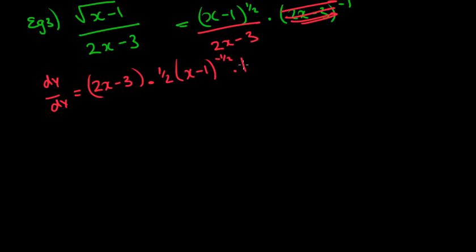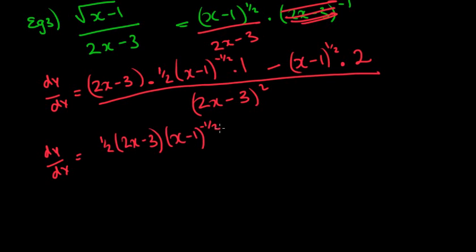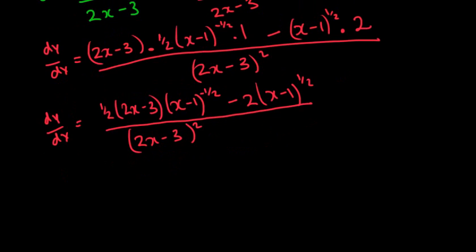Applying the quotient rule: v·u' = (2x - 3) × (1/2)(x - 1)^(-1/2) × 1. Then subtracting u·v': (x - 1)^(1/2) × 2 — the derivative of the bottom is just 2. All over (2x - 3)². Simplifying: we get (1/2)(2x - 3)(x - 1)^(-1/2) minus 2(x - 1)^(1/2), all over (2x - 3)².